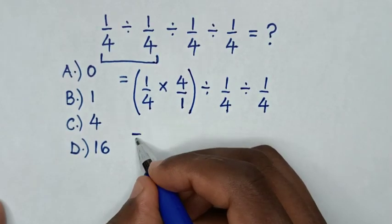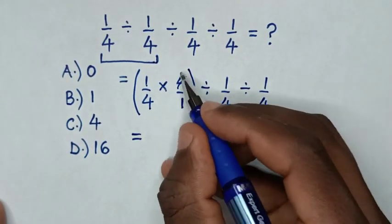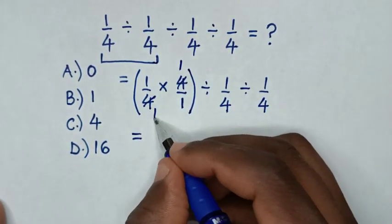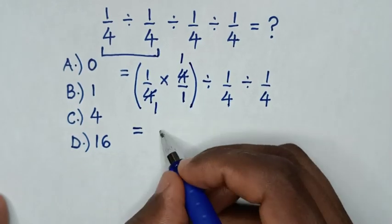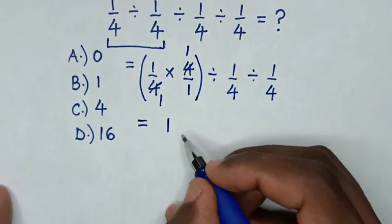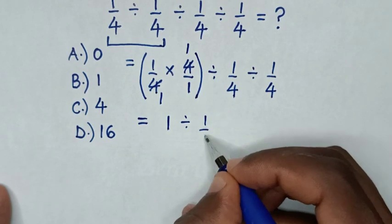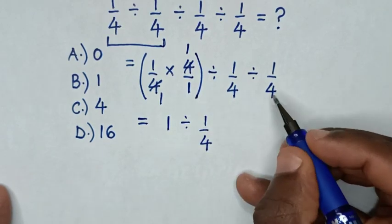Then, in next step, it will be equal to, to simplify here 4 by 1 and this 4 by 1. So, here in the bracket, it is 1, then divided by 1 over 4, then divided by 1 over 4.